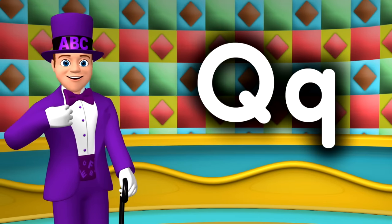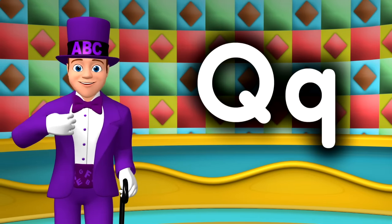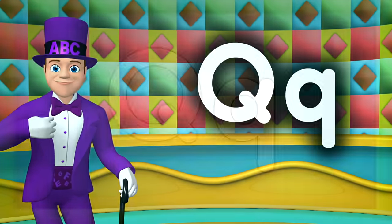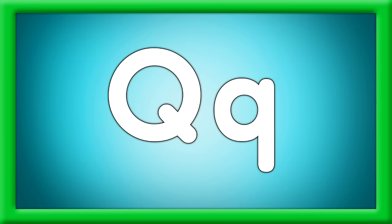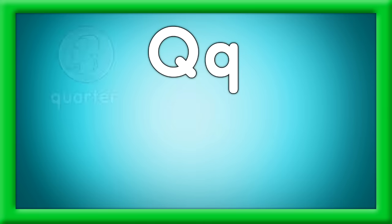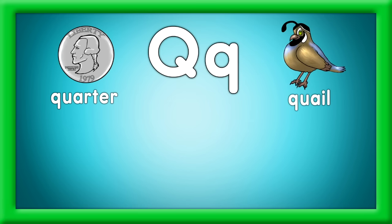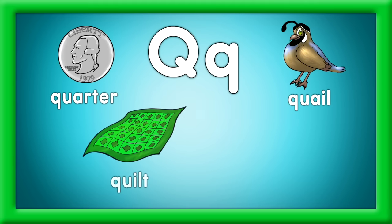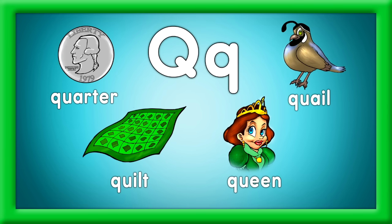I see a capital Q and a lowercase q. We'll dance and play and learn some too. Let's sing some words that start with Q. A quarter and a quail, each has a tail. The quilt and queen look good in green. Quarter, quail, quilt, queen — these are Q words I have seen.